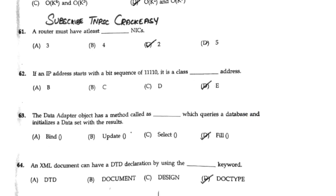If an IP address starts with a bit sequence of 11110, it is a Class E address.